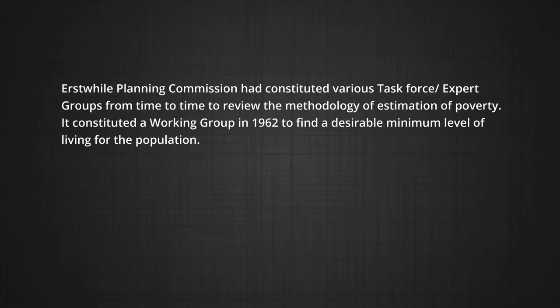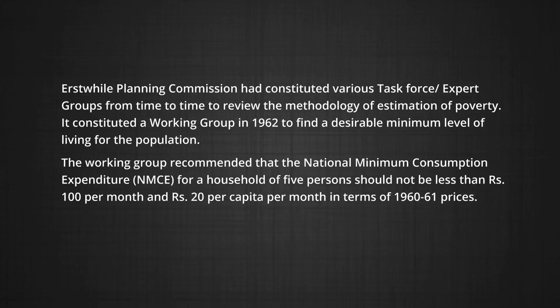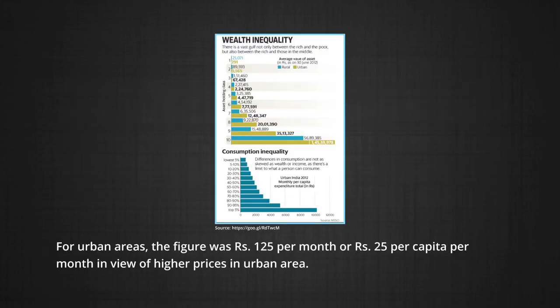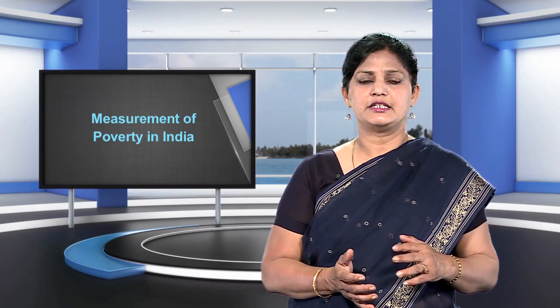It constituted a working group in 1962 to find a desirable minimum level of living for the population. The working group recommended that the national minimum consumption expenditure, popularly known as NMCE, for a household of 5 persons should not be less than rupees 100 per month and rupees 20 per capita per month in terms of 1960-61 prices. For urban areas, the figure was rupees 125 per month or rupees 25 per capita per month, in view of higher prices in urban areas. It may be noted that the poverty line excluded expenditure on education and health, as they were assumed to be provided by the government.